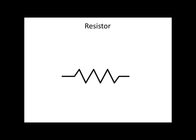How much the current gets slowed down is given by Ohm's law, V equals IR, where V is the voltage, I is the current, and R is the resistance.